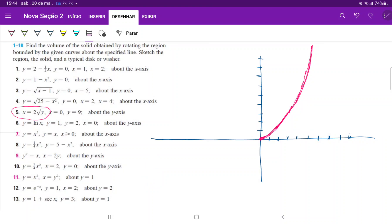So once we have this, let us now draw the other curves. We'll draw the curve x is equal to 0, which is just the y-axis. So this is our x is equal to 0. And lastly, we have our y is equal to 9.